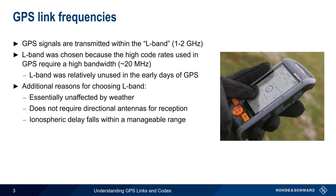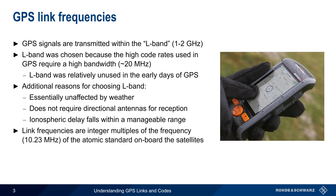And if you're wondering why GPS links have somewhat odd-looking frequencies, there's a simple explanation. They are all integer multiples of 10.23 MHz, the frequency of the atomic standards carried on board each GPS satellite.